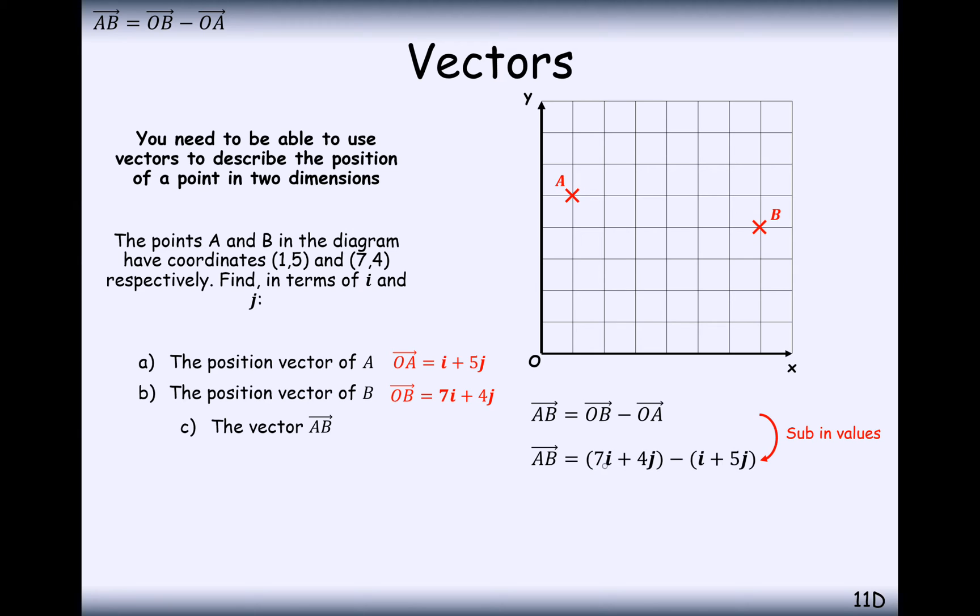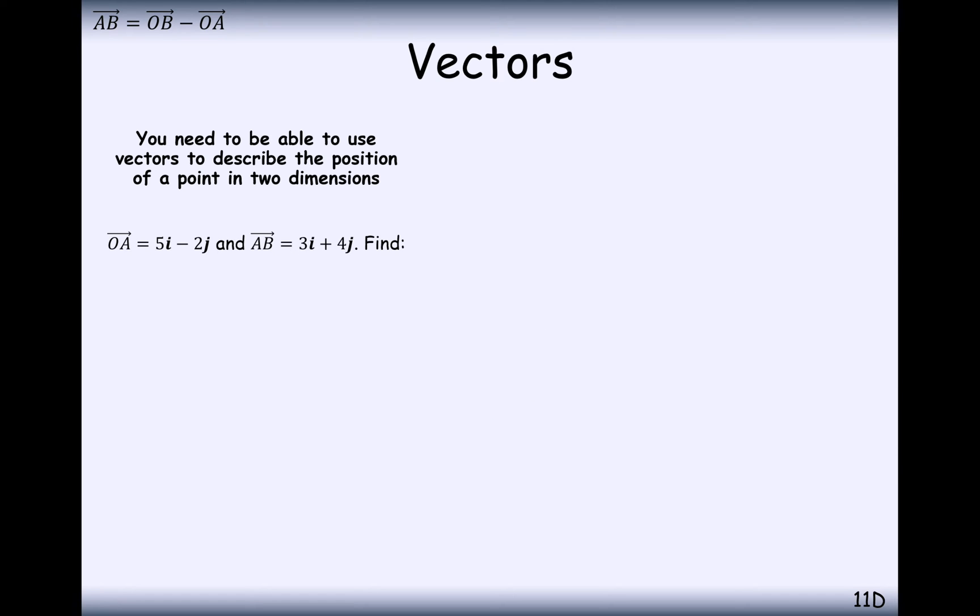So that's going to be 7i plus 4j, which is what B is, take away the coordinate for A, and simplifying our answer we get 6i minus j. And that makes sense because we've got to go 1, 2, 3, 4, 5, 6 right and 1 down. So 6i minus j makes sense there.